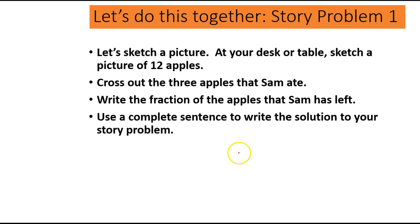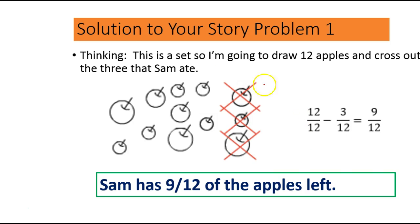I hope that you paused and you took the time to work in your journal to illustrate this problem and to write out a complete sentence. Let's go and check your answers. So here's our thinking. This is a set. I'm going to draw the 12 apples. And remember, they're not all the same size. And then we're going to cross out the three that Sam ate.